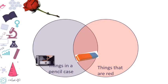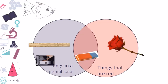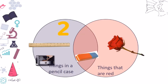Oh, what is it? It's a rose. Do you put the rose in a pencil case? No. Usually not. But it is red color, so we put it here. The next object is a fish. Is it a pencil case? No. Is it red color? No. So where will we put it? We will put the fish just outside these circles.